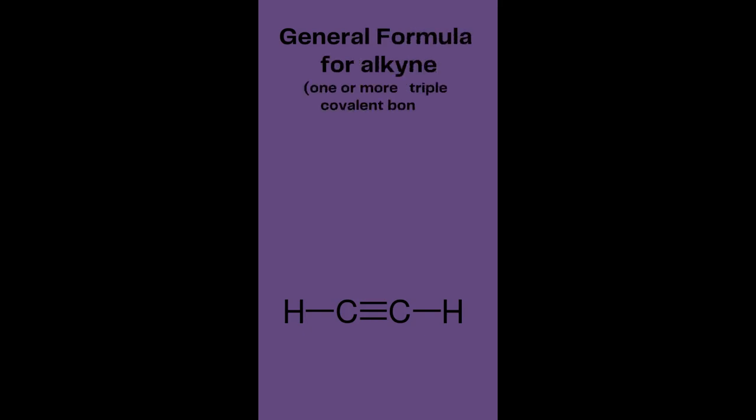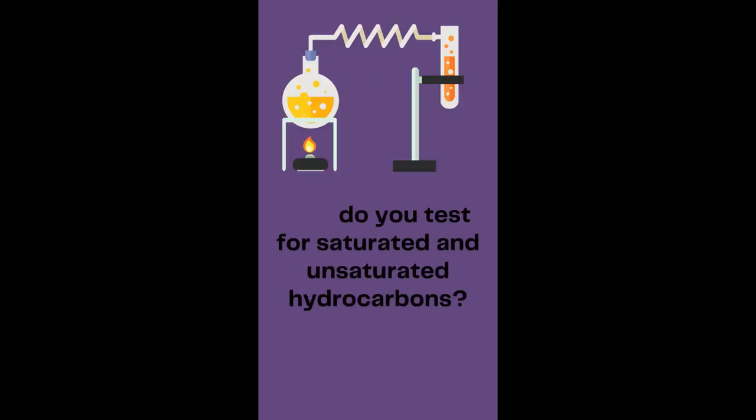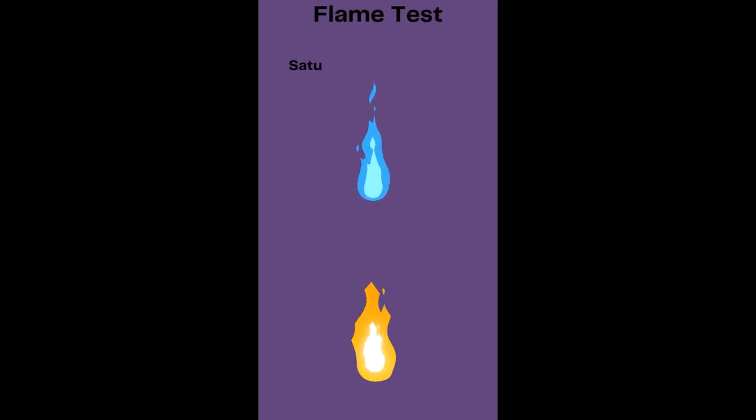General formula for alkyne: C n H 2n minus 2, one or more triple covalent bonds present. Example: ethyne C2H2.